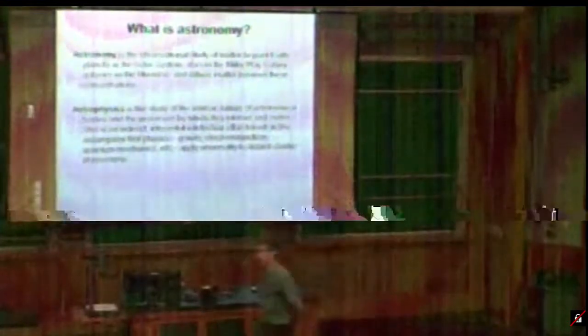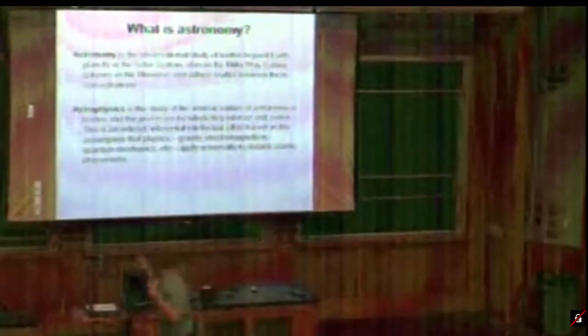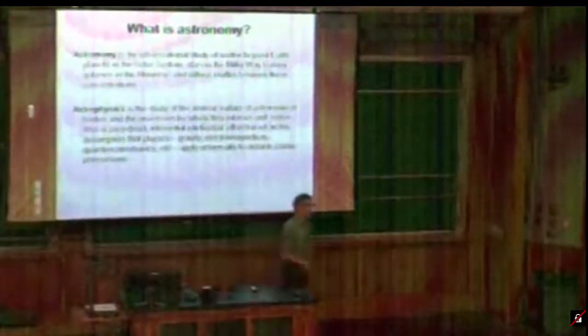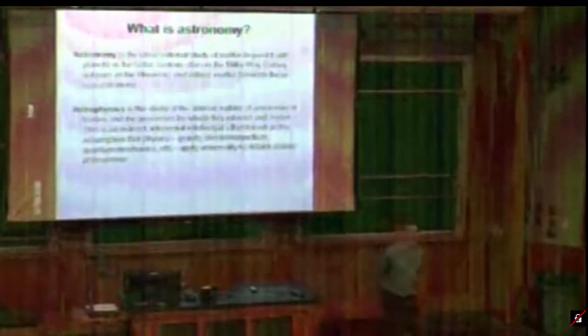We use the H-alpha line from the three to two transition of hydrogen—the same in a lab in Texas as in a redshift five quasar. Because of that amazing simplicity of the universe, we're able to understand the physical nature and processes and evolution of cosmic objects.